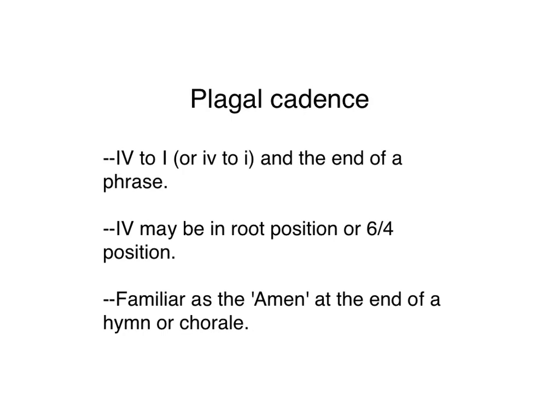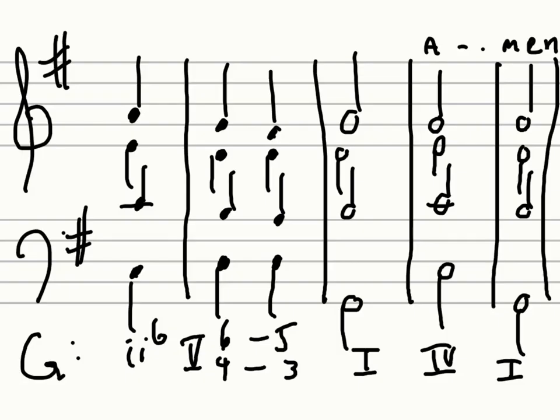Our second new cadence type is the plagal cadence. The plagal cadence ends a phrase four to one. The four can be in root position, or in six-four position, like a neighboring six-four. This is very familiar as the amen at the end of a hymn or chorale. In something like this, where we have an authentic cadence — A-men — the amen at the end of the hymn is the plagal cadence, four to one.